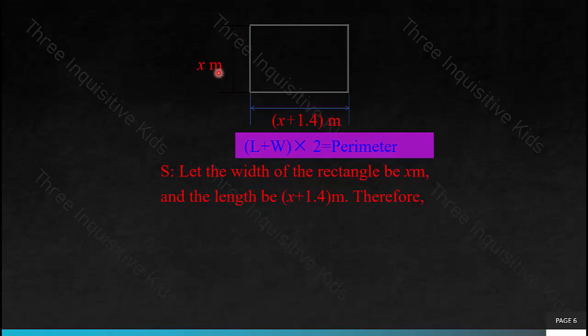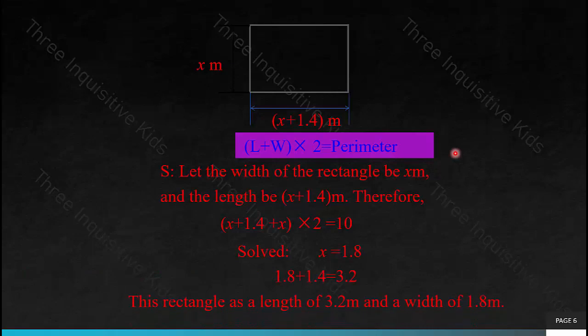Here's a rectangle: we have x meters and x plus 1.4 meters. The length plus width times 2 equals the perimeter. So, let the width of the rectangle be x meters and the length be x plus 1.4 meters. Therefore, (x + 1.4 + x) × 2 = 10. Solved: x = 1.8. This rectangle has a length of 3.2 meters and a width of 1.8 meters. Just asking yourself that one little question — what hasn't changed? — will really lead you to the rest of this. What is the equivalent value? What stays the same?